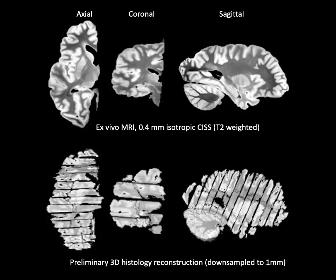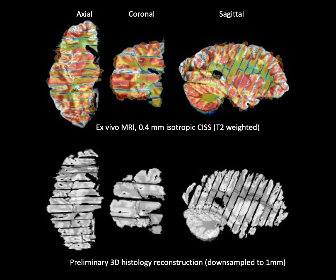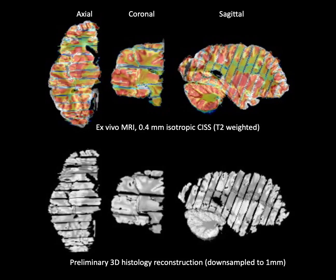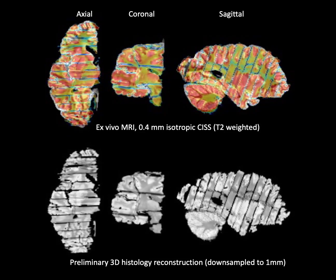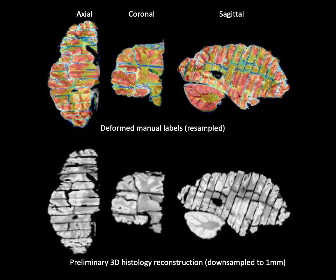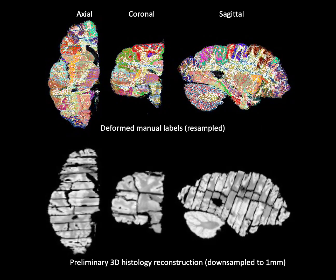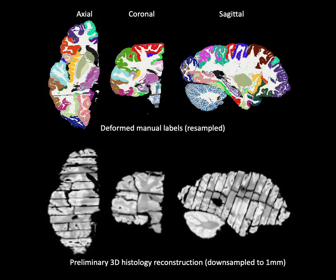We then align the blocks of histology to the MRI using a custom image registration algorithm that ensures that the different blocks don't overlap. Once the histology has been aligned, we can merge the corresponding manual segmentations into 3D space.